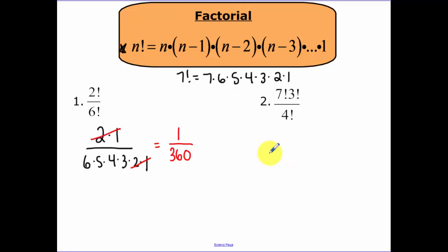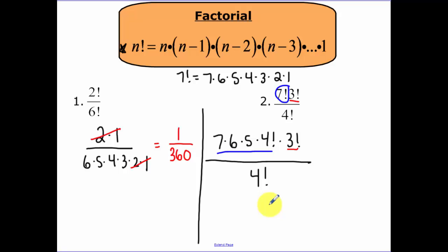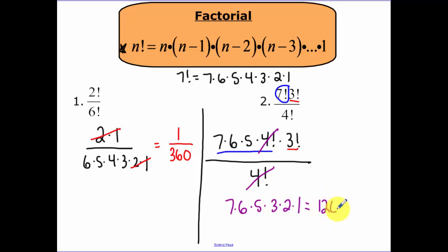Number two: 7 factorial times 3 factorial over 4 factorial. We can write 7 factorial as 7 times 6 times 5 times 4 factorial, times 3 factorial, all over 4 factorial. Since we're multiplying, the 4 factorials cancel, leaving us with 7 times 6 times 5 times 3 times 2 times 1, which equals 1,260.